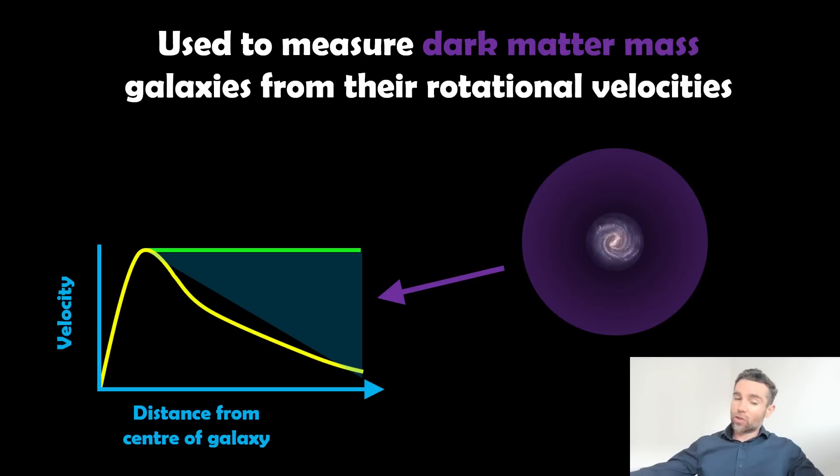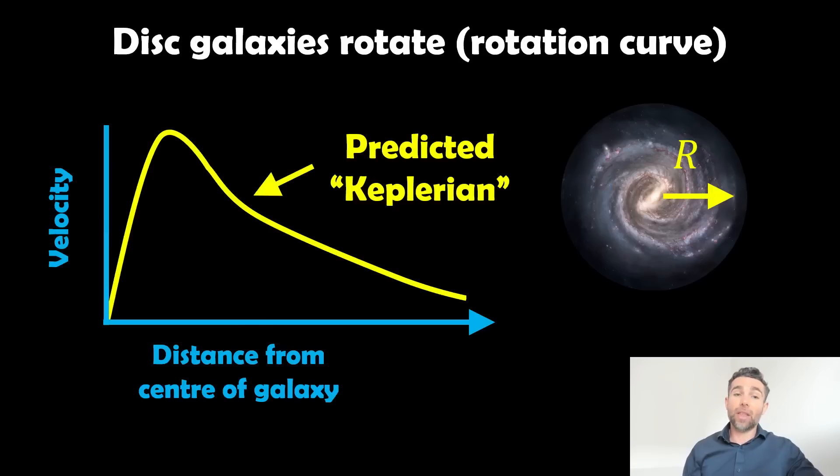Now, we would expect Keplerian-wise for it to drop off, but we measure it to be fairly flat. That gives us a hint that we have dark matter. So we can measure the dark matter mass by the difference in velocity from what we measure to what we expect.